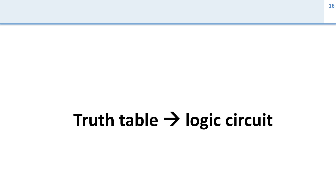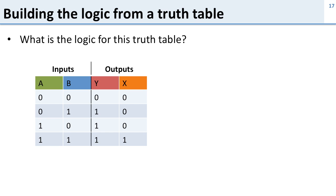Now we're going to look at how you can take a truth table and convert it into a logic circuit. The truth table here has all combinations of the inputs and specifies the outputs for all of them. You should also notice this is the same truth table we just figured out from the logic circuit, so you should expect we're going to have the same results as what we had in the previous part.